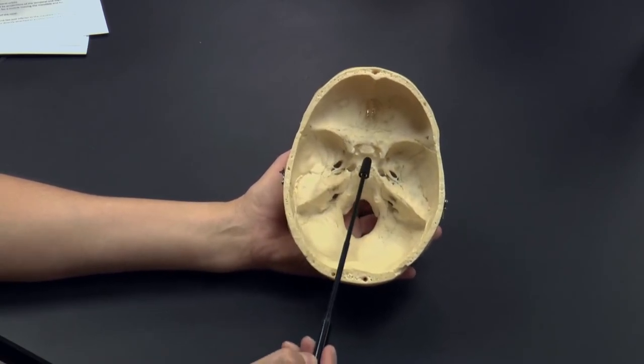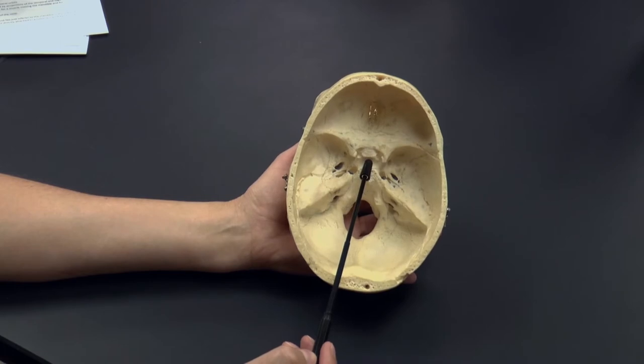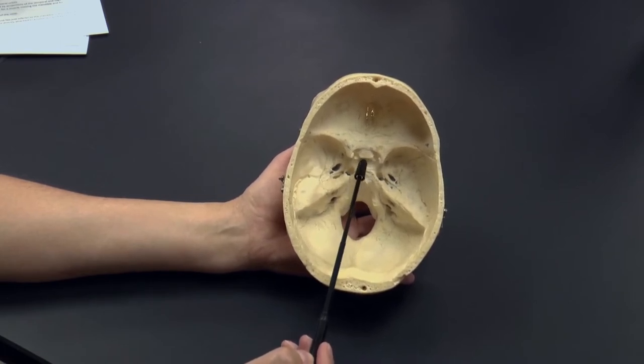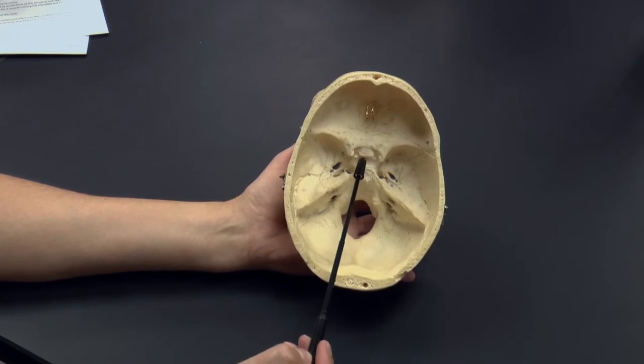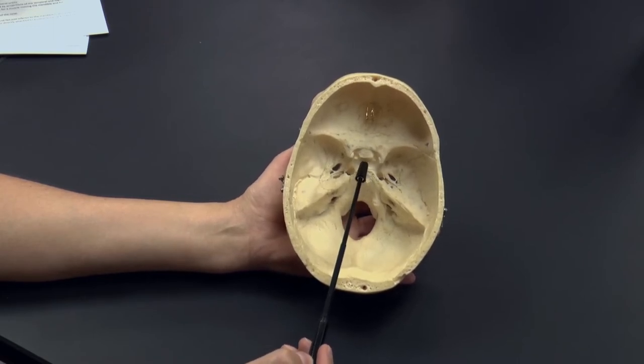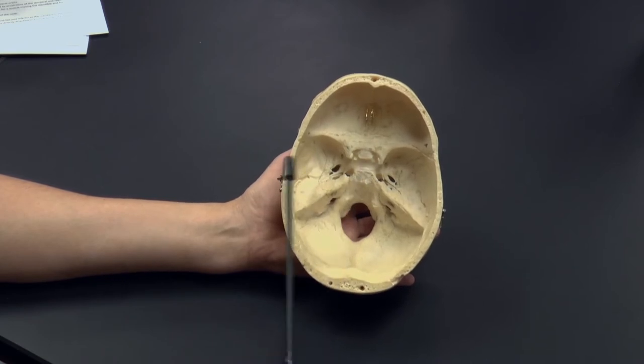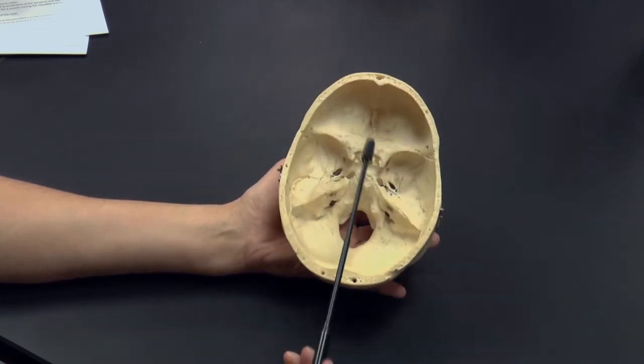And there's one important part of the sphenoid bone that we look at, and it's called the sella turcica. The sella turcica is this little depression right on the midline of the sphenoid bone that holds the pituitary gland of the brain. And when we get to nervous system, we'll talk about the pituitary gland.